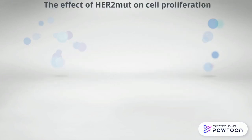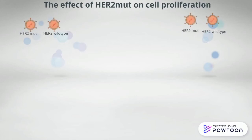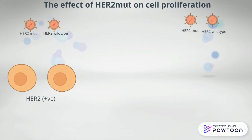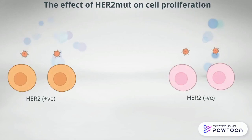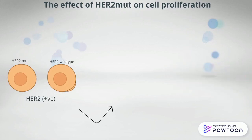To study the effect of HER2 mutants on cell proliferation, both HER2 wild-type and mutants were transduced into HER2-positive and HER2-negative cells using retroviruses. The cell growth was significantly suppressed in the mutant but not in the wild-type.